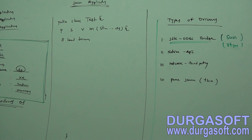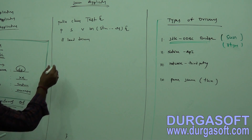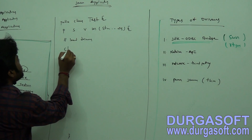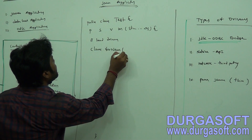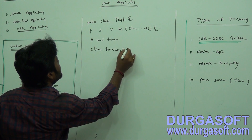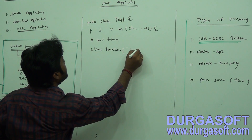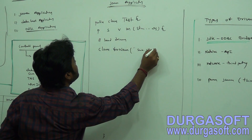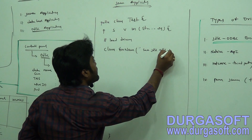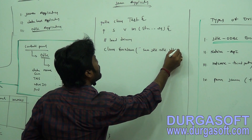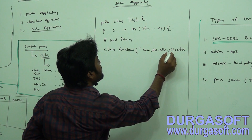This jar file is given by Sun, so you need to load the Sun-provided driver. Using Class.forName(), you need to load your driver. The driver class name is sun.jdbc.odbc.JdbcOdbcDriver.